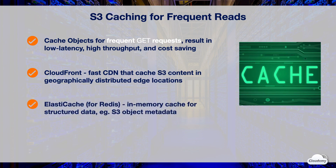Amazon ElastiCache for Redis is a managed in-memory cache for structured data. It provides a high-performance, scalable, and cost-effective caching solution. ElastiCache is a recommended caching layer for structured data. For instance, you can cache metadata of popular S3 objects in ElastiCache. Both CloudFront and ElastiCache can provide caching for read-heavy workloads.